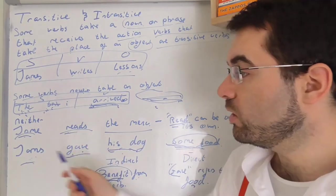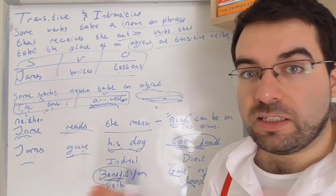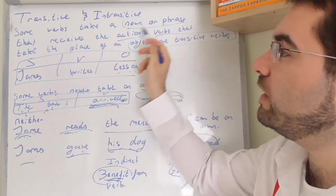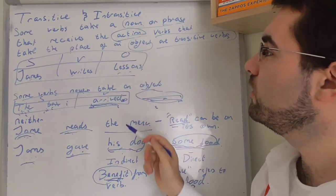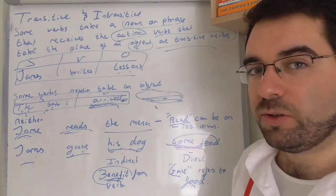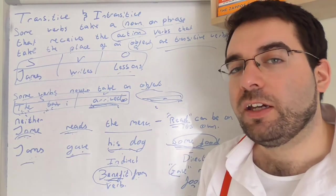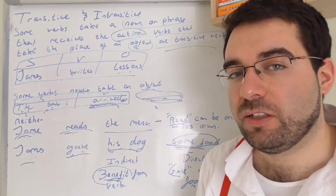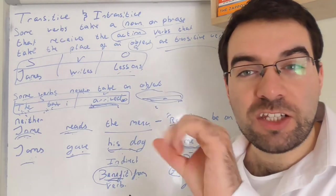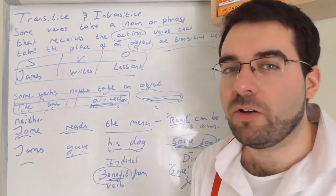So transitive verbs and intransitive verbs take the place of a noun or a phrase. Exactly. James gave his dog some food. The taxi arrived. James reads the menu. James reads, that's it. Or you could say James read, James is reading, that's it. Interesting stuff. So some verbs take the place of a noun or a phrase that receives the action. The verbs take the place of object or transitive verbs. Cool. However, if you want to keep learning English, expanding your vocabulary and speak like a native Englishman, then press the subscribe button below and press the bell notification next to it so you never miss a video on upload. Yeah. But keep going, keep learning.